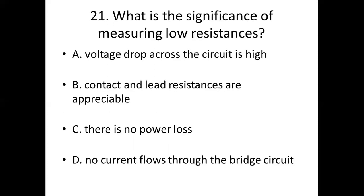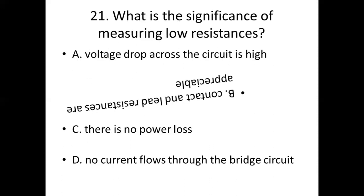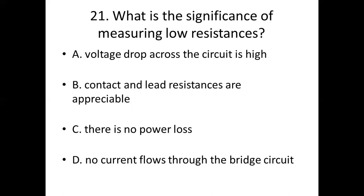21st bit. What is the significance of measuring low resistance? Option A: voltage drop across the circuit is high. Option B: contact and lead resistance are appreciable. Option C: there is no power loss. Option D: no current flows through the bridge circuit. Answer: Option B, contact and lead resistance are appreciable.